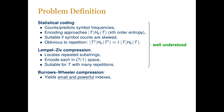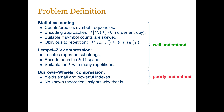BWT compression, on the other hand, is known to produce indexes that can answer powerful queries and at the same time are very small in practice. Very little, however, is understood about why these indexes are so small. In contrast to the other two methods, BWT compression is thus relatively poorly understood. We therefore ask the question: what is the output size of the Burrows-Wheeler compression?